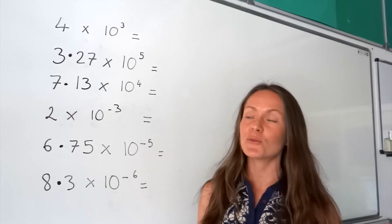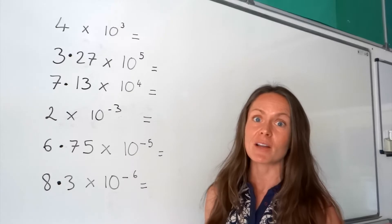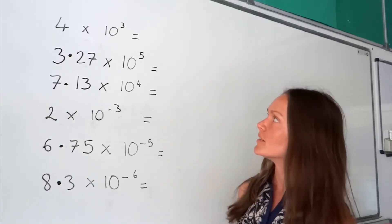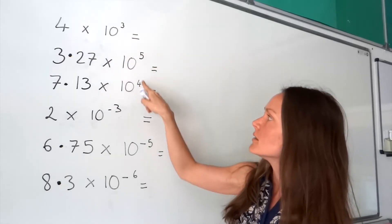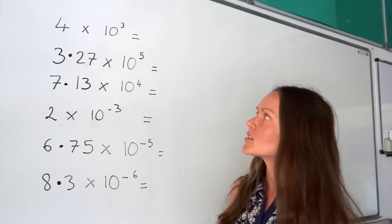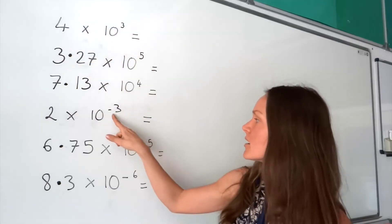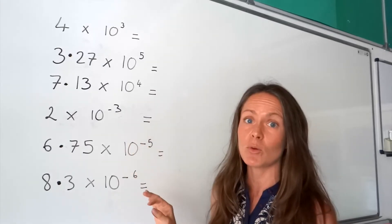So here I've got my numbers in standard form, and I want to take them out of standard form and write them as ordinary numbers. Just before we get started, let's have a look at the powers. In the first three, all the powers are positive, so I can expect those numbers to be large numbers. In the last three, the powers are negative, so I can expect those numbers to be small ones.